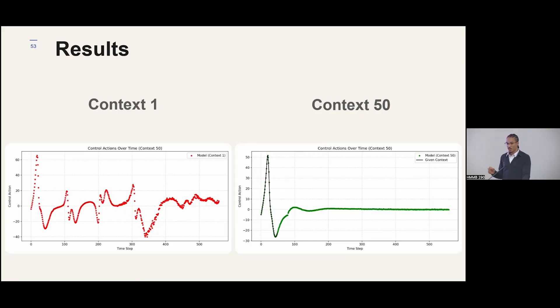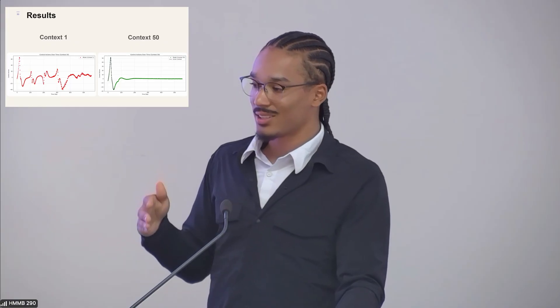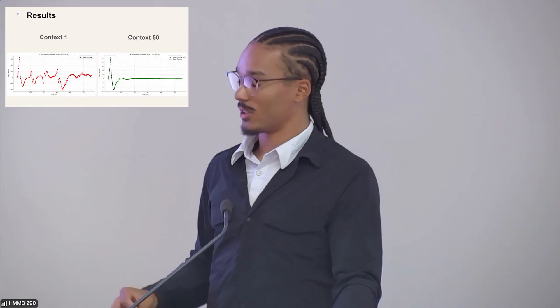Opposed to context 1, where it starts making the control actions right from the beginning, and as you can see, the control actions do not decay to zero, and we watched the video, it did not go to equilibrium. And we suspect that this is because the model is not learning the control actions. Instead, or it's not learning the dynamics. Instead, it's making actions and then trying to learn it on the fly, and it's just not working.